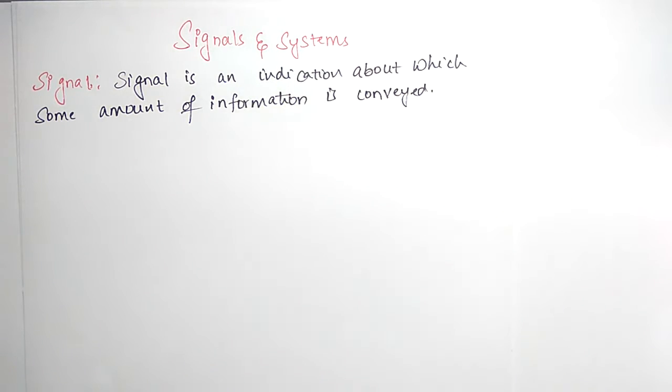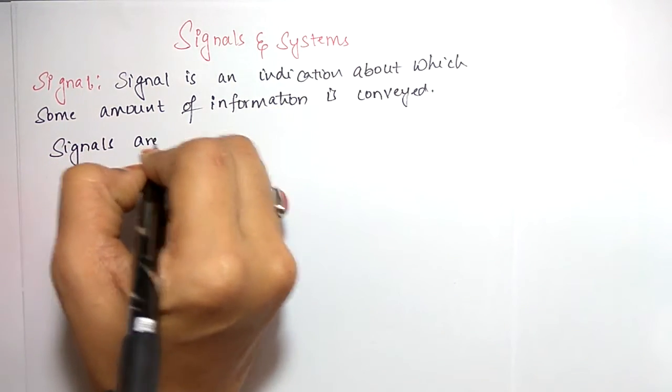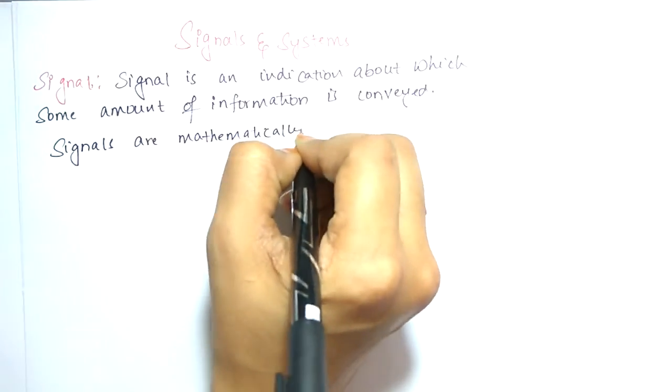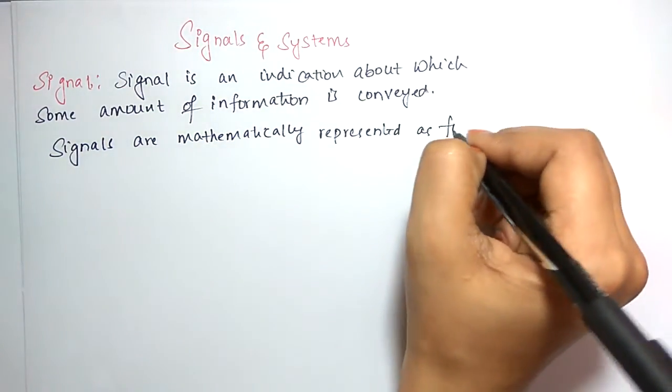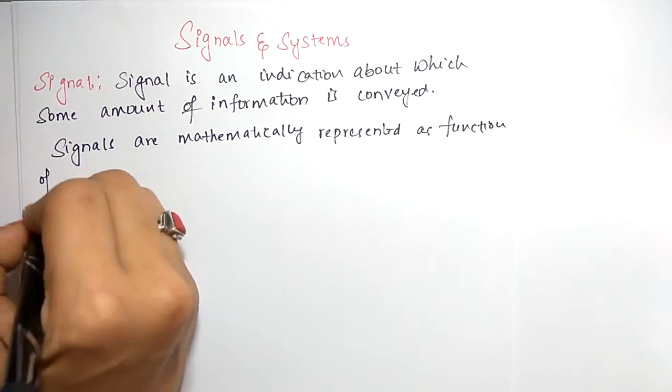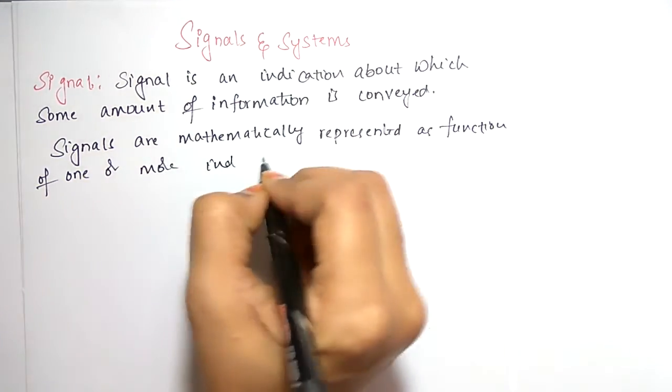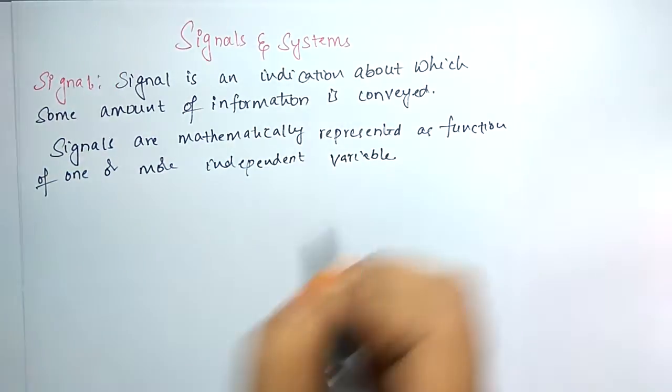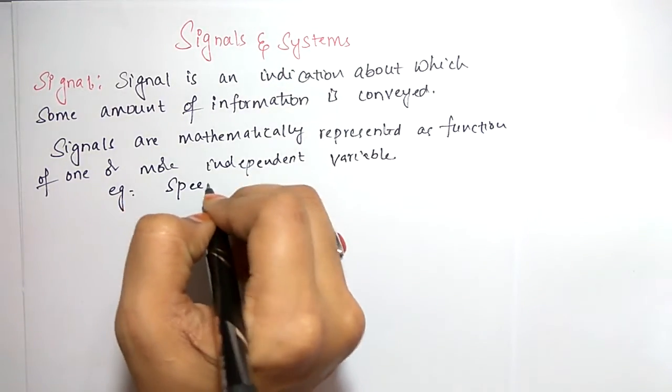Signals are mathematically represented as functions of one or more independent variables. For example, if you take speech, it is one-dimensional in terms of time.